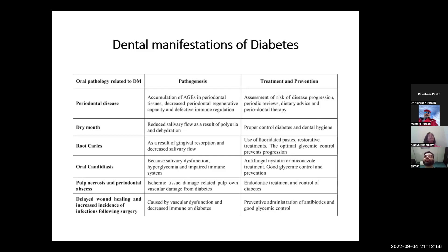Then coming to root caries — caries is nothing but a cavity in layman's terms. Due to dry mouth and periodontal disease, which act as precipitating factors for cavities to form in your tooth, use of fluoridated toothpaste and restorative treatments are acceptable. One important condition is oral candidiasis, which is basically a fungal infection. White patches are seen in the mouth — the typical curdling of milk appearance is the clinical sign we look for. The main cause is decreased salivary flow and impaired immune system due to diabetes. Antifungal treatment is necessary for candidiasis.